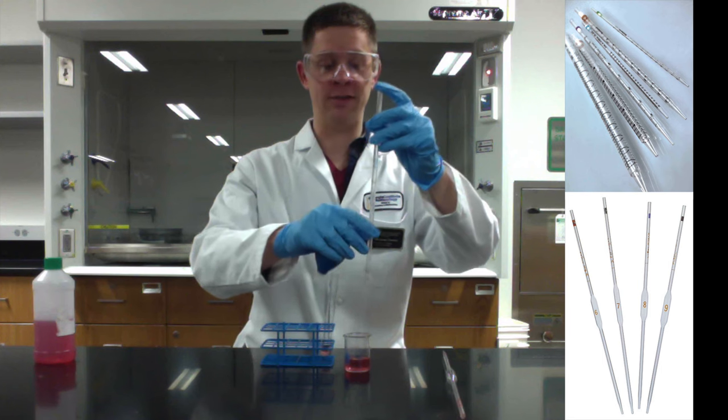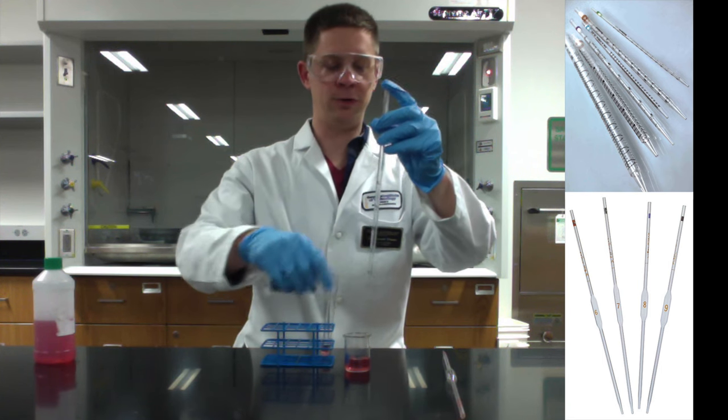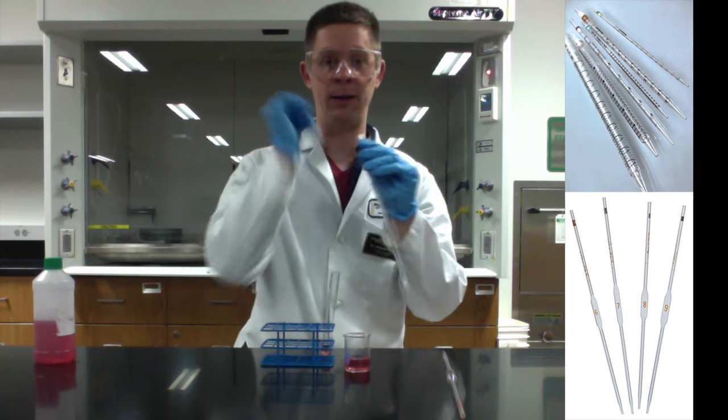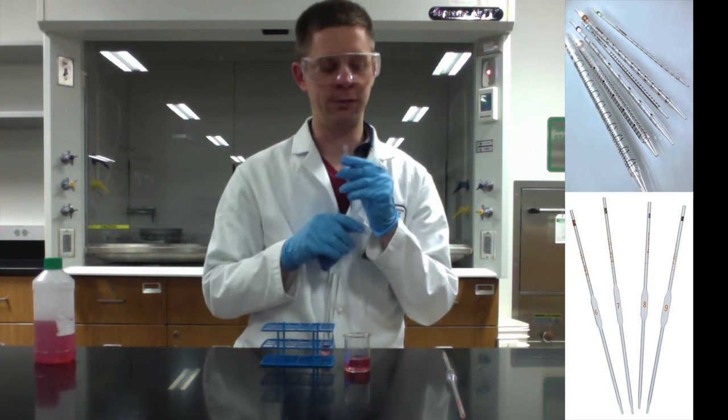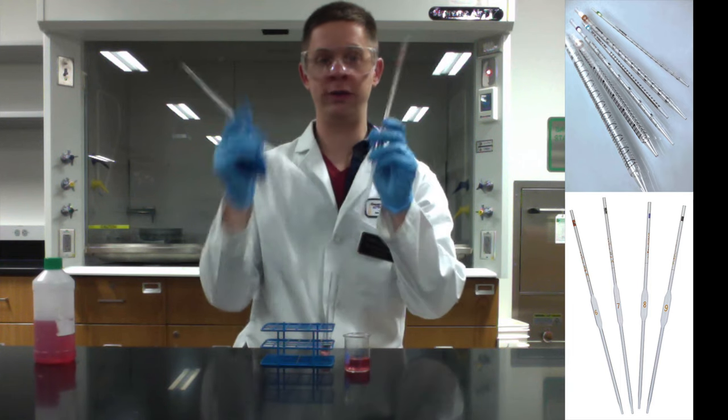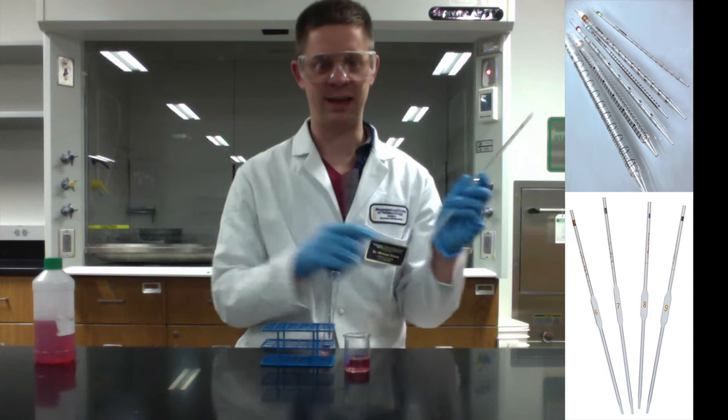For a serological, you can put it at the zero line and deliver by difference, or you can pull up using the smaller numbers to the volume you need to deliver and squirt in everything, blowing out the last little bit of liquid. For the volumetric, just release your finger and let everything go, making sure not to squirt in that last little bit of liquid.